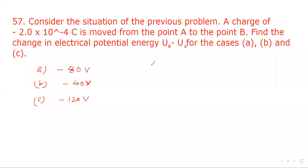Here we have to evaluate the formula UB minus UA. We know the formula for potential energy UB minus UA equal to V times Q. So here potential is minus 80 times charge is minus 2 into 10 to the power minus 4.